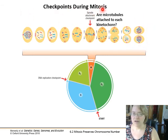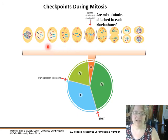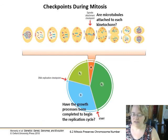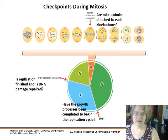During mitosis there are checkpoints the cell must reach before continuing. In metaphase: are the microtubules fully attached to each kinetochore? If not, one pair of sister chromatids could be pulled to one side without splitting. In G1 phase: have growth processes completed and are we ready to start synthesizing DNA? And after S phase: is replication finished and DNA damage repaired before we move into another round of mitosis?